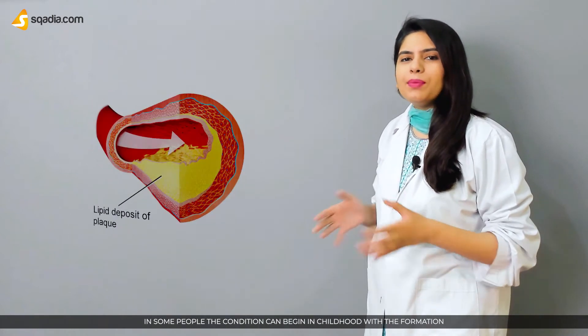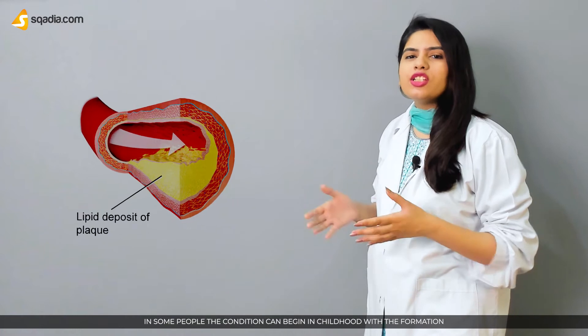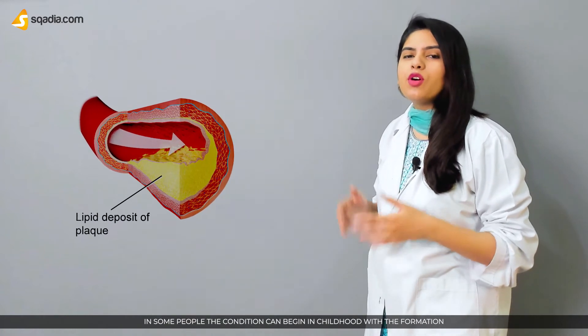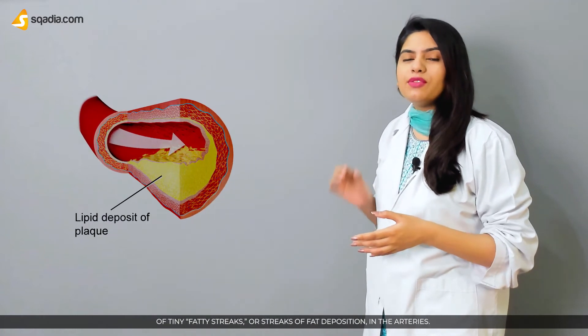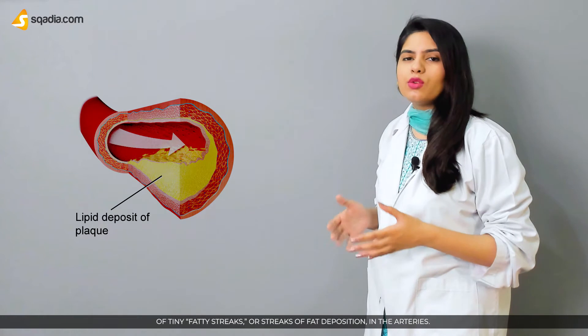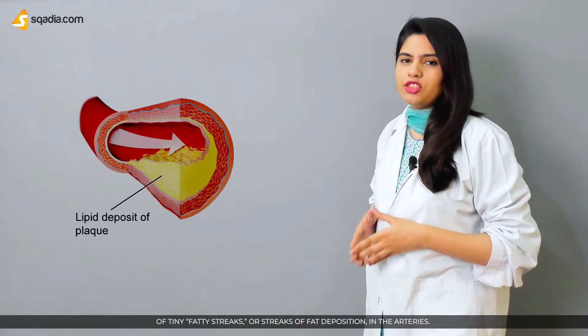In some people, the condition can begin in childhood with the formation of tiny fatty streaks, or streaks of fat deposition in the arteries.